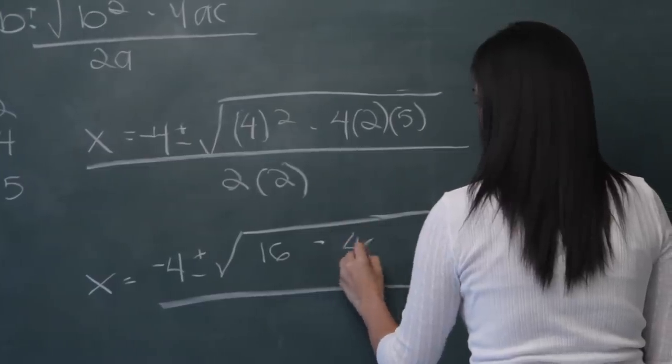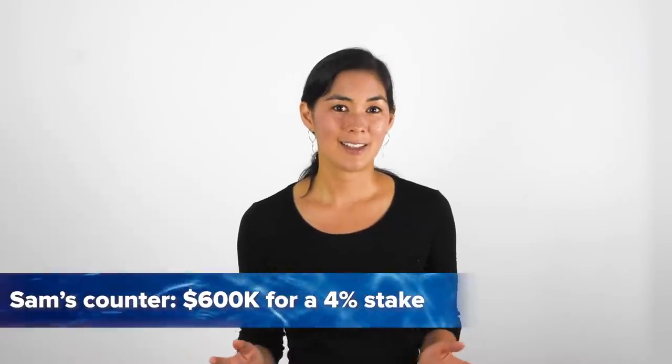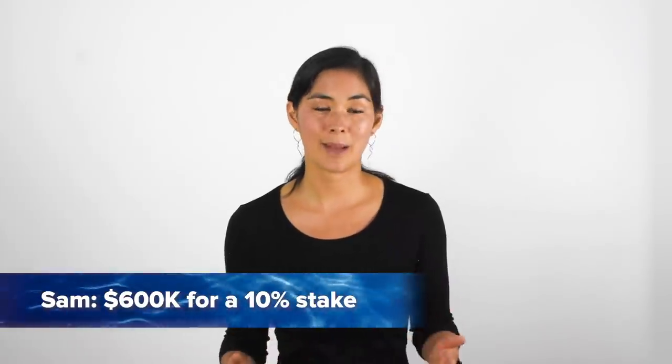I actually majored in math in college. And it turns out I forgot it all because I could not calculate for the life of me during that negotiation. I countered with $600,000 for 4%, which was a higher valuation than I had originally asked for. I just completely flubbed the numbers. He looked at me and he was like, no, I can't do that. So I was about to walk away. And then I realized I had gotten the math wrong. And I stopped myself and I said, oh my gosh, I got the math wrong, which of course made it on TV.